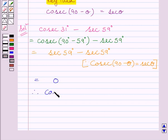Therefore, cosec 31° minus sec 59° equals 0. So 0 is our required answer.